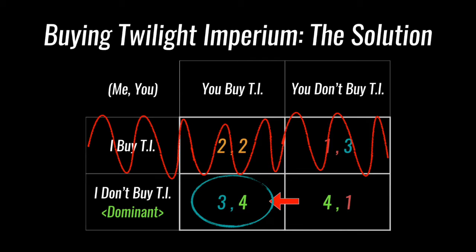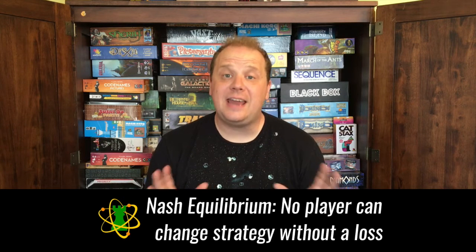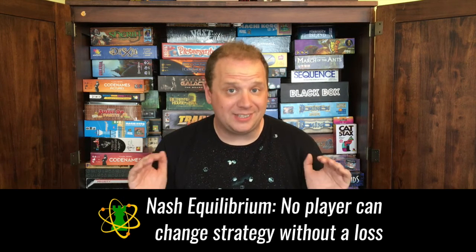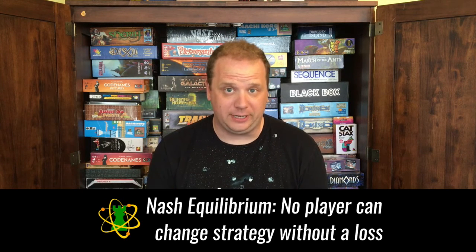This is the Nash equilibrium for this game. Once we circle this box, neither one of us can change our strategy without losing utility. Finding the Nash equilibrium is the key to victory.